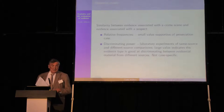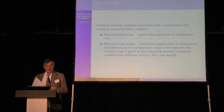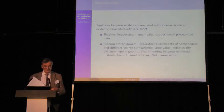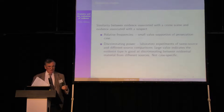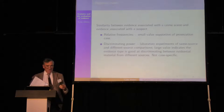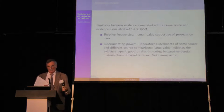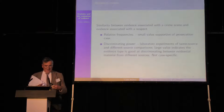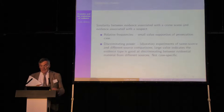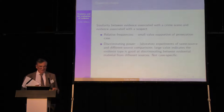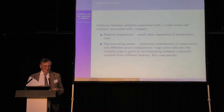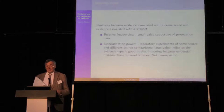Discriminating power is a more general aspect: how strong is a particular piece of evidence in general? There would be laboratory experiments — comparisons of items known to come from the same source, and comparisons of items known to come from different sources. For example, hair comparisons with hairs known to come from the same person and hairs from different people. You could work out a statistic, and a large value would indicate the evidence type was good at discriminating between material from different sources. It's not really applicable to particular cases, only in general to show this is good evidence.